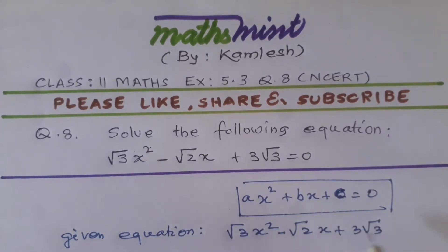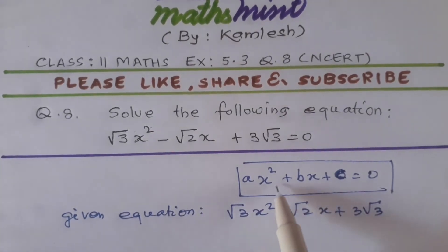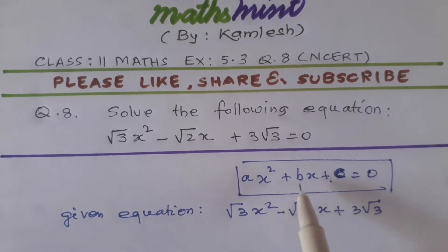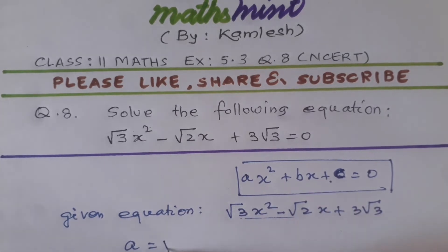This equation is given in the question and the general form of the quadratic equation is A x squared plus B x plus C equal to 0. So if we will compare this given equation with the general form, we find that A equal to root 3.